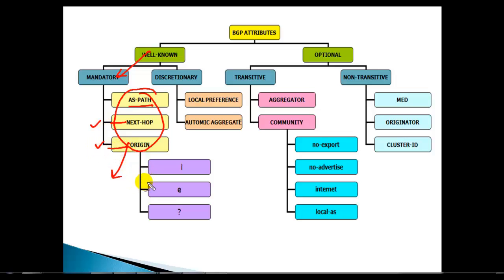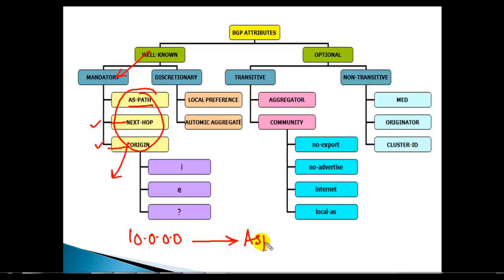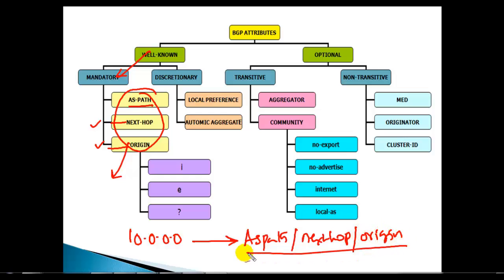We call these three attributes well-known and mandatory because whenever BGP advertises any network, it also advertises the AS path information along with the BGP update, the next hop information, and the origin information. That is why we call them well-known and mandatory attributes. Let us understand one by one, starting with the AS path attribute.